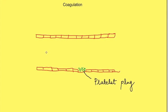The hemostatic process consists of three main responses: vasoconstriction, platelet plug formation, and finally clot formation.